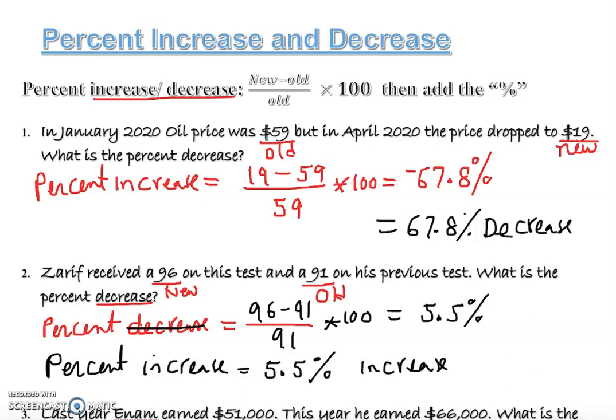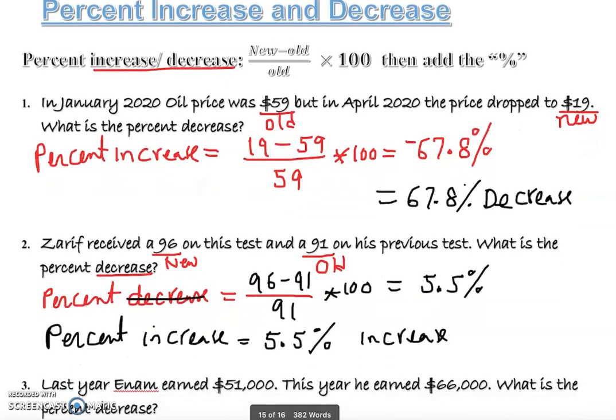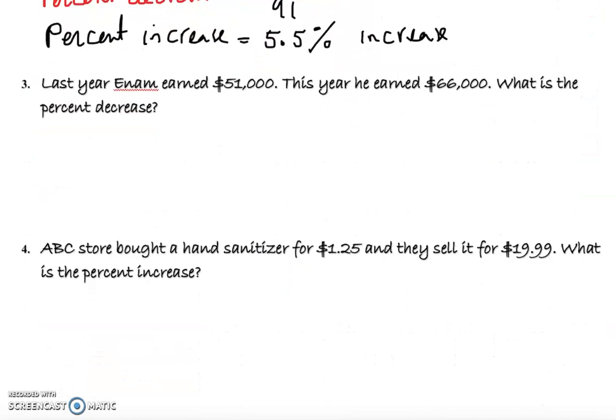Let's take a look at the next problem here. Last year Enam earned $51,000. This year he earned $66,000. What is the percent decrease? Again, it shouldn't be decrease, it should be increase because I clearly see there is a big jump here. So I'll do increase because everyone sees it. So this is basically the old, that's the new. Once we know the old and new, we are ready to do this.